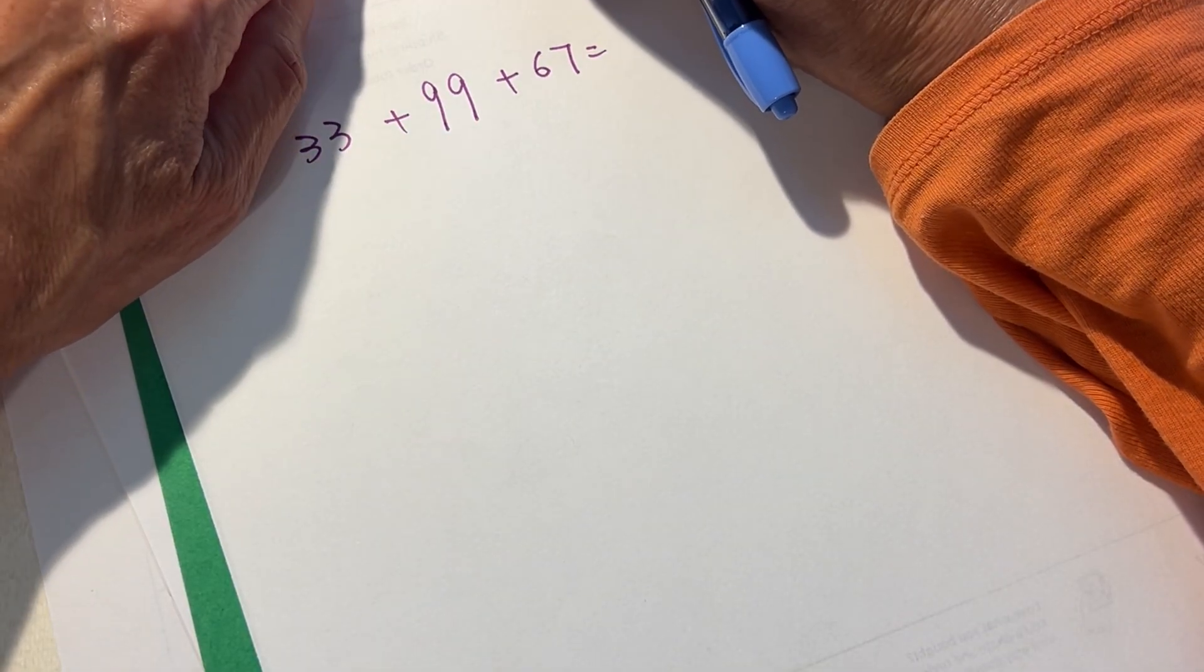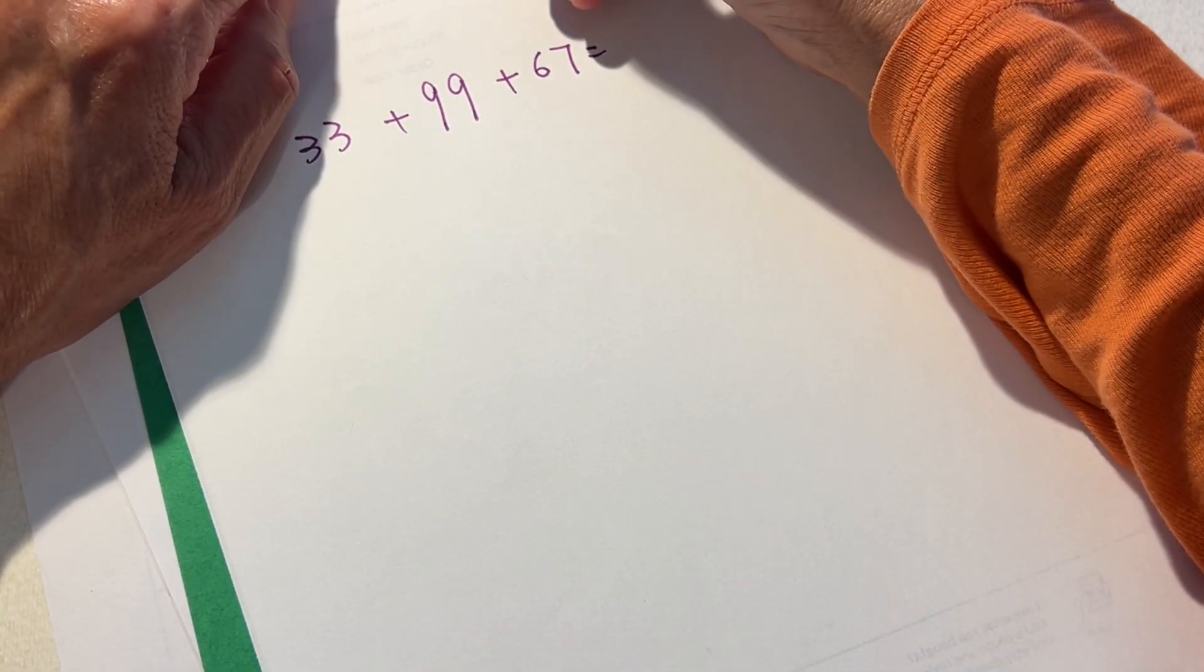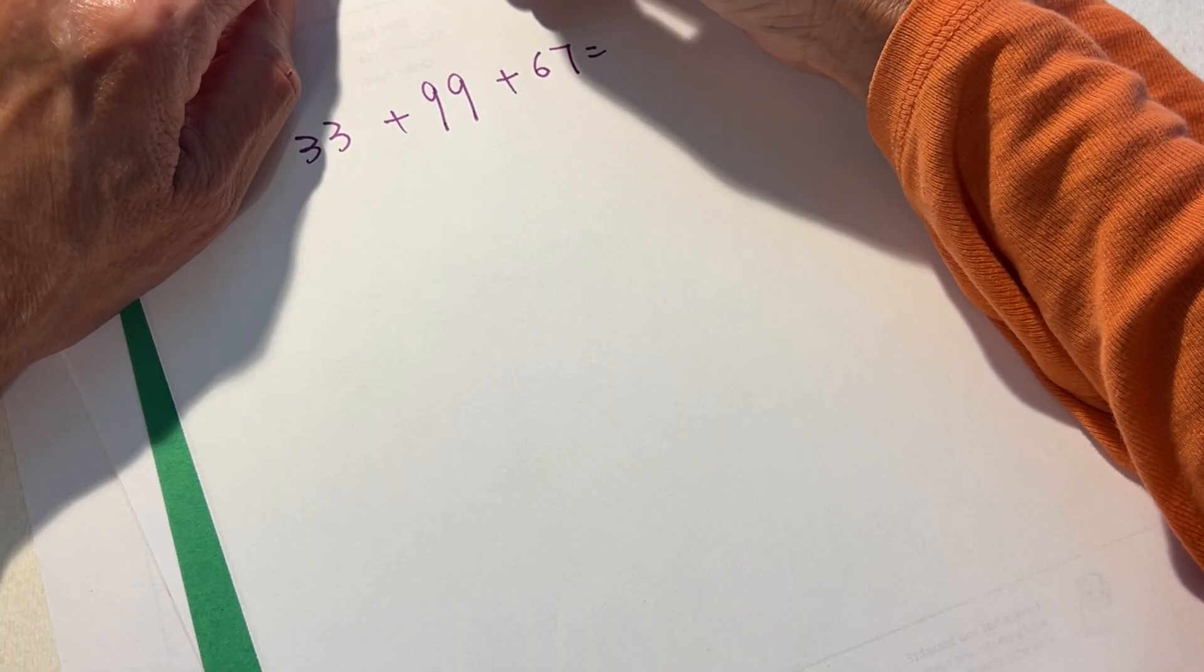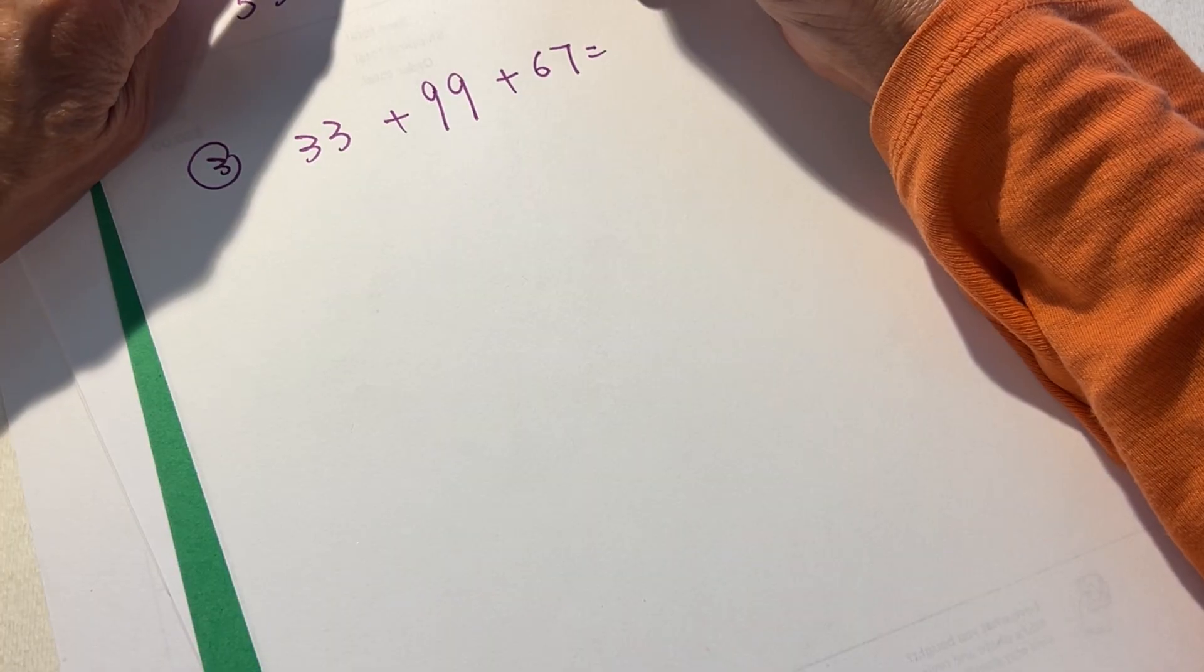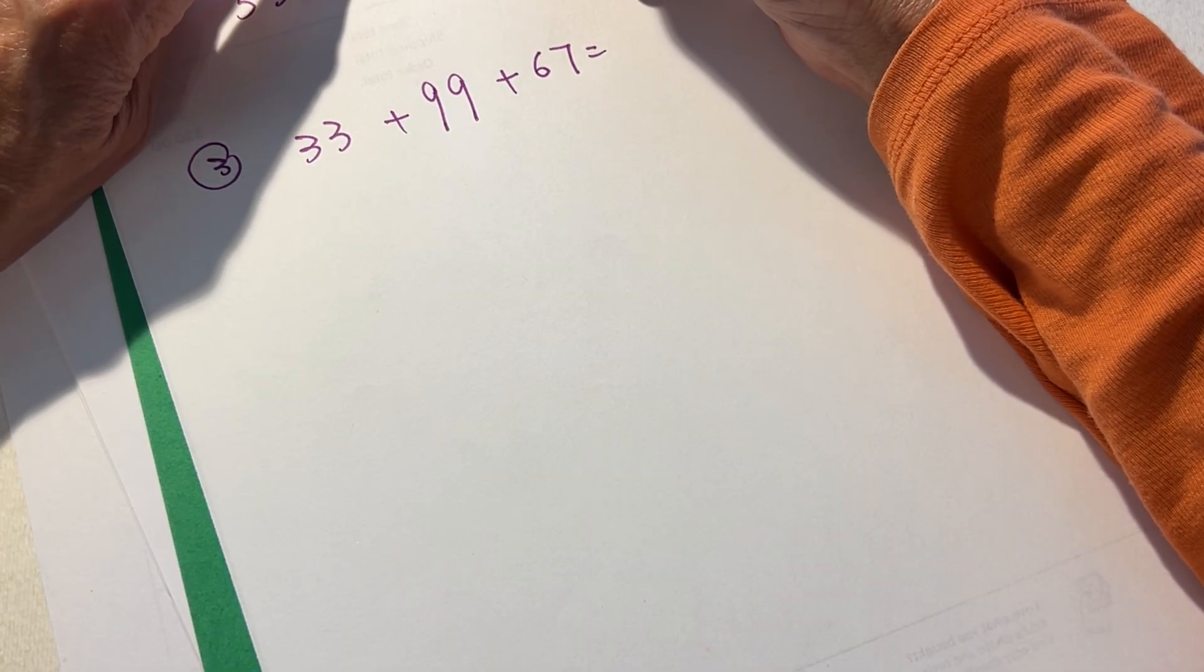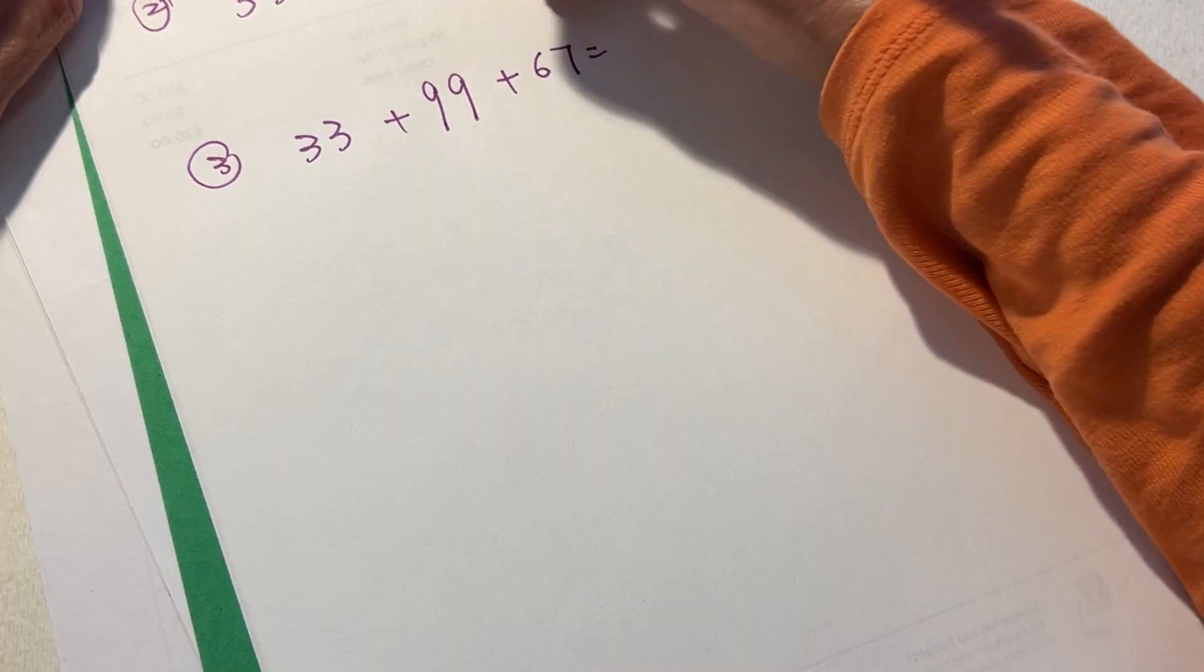And then see, five plus four is nine and there is one incoming number from two plus eight. So this one is one hundred, right? So one hundred twenty-nine.